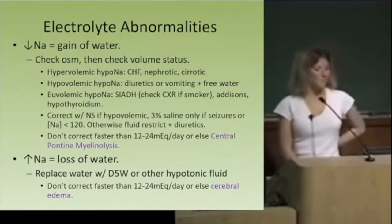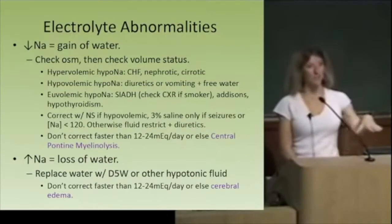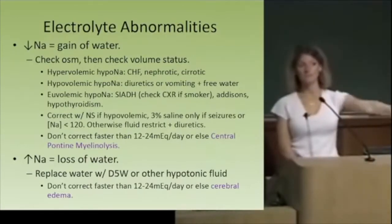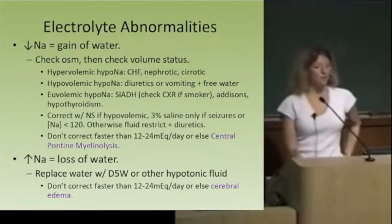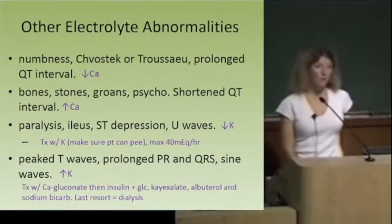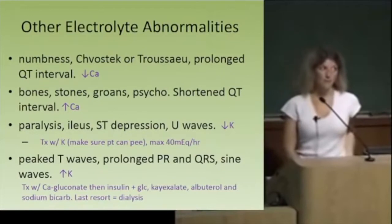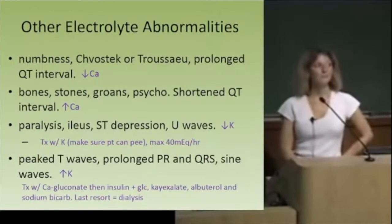What if the patient has paralysis, constipation, and on EKG you see ST depression and U waves? That's hypokalemia. And those peaked T waves? That's hyperkalemia. More importantly, how do you treat hyperkalemia? Calcium gluconate is first — it stabilizes the cardiac membranes. But that doesn't do anything about having too much potassium in your body, so we need more steps.